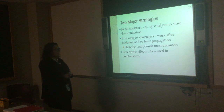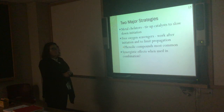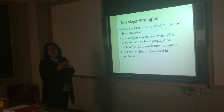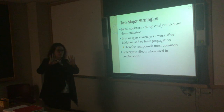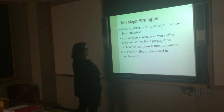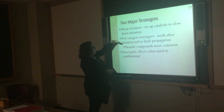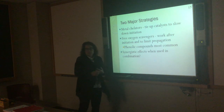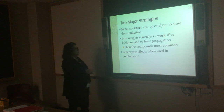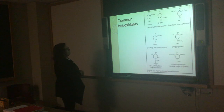Compounds that interrupt the free radical chain mechanism are called free oxygen scavengers. They work after initiation to limit propagation. Almost all of those are phenolic compounds — a phenolic ring has two states where it moves back and forth, two valence states, and the double bonds move from one to the other. If you use free oxygen scavengers in combination with metal chelators, you can get a synergistic effect, and that's a strategy a lot of people use.